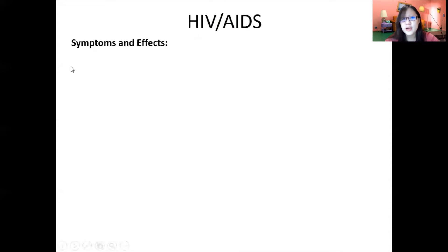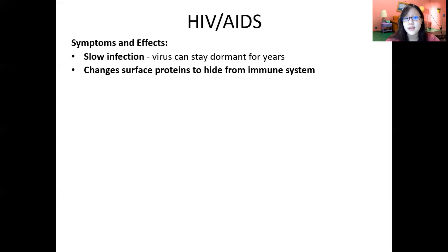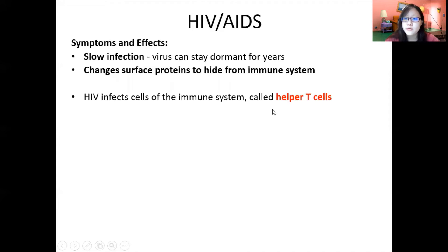HIV is a slow infection and the virus can stay dormant for years. It is possible that the virus incorporates its DNA into the host cell and does not replicate for a while. Additionally, HIV can survive in the human body and change its surface proteins to hide from the immune system, so the immune system cannot detect or destroy it — allowing it to persist for long periods.